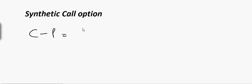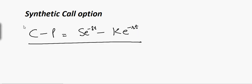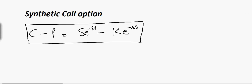Hi everyone. In this tutorial I will talk about the synthetic call option. We will use the call-put parity, which I have explained in the previous tutorial. The call-put parity looks like this: call minus put is equal to S minus K, and then we subtract the dividend from the stock price and the interest from K.